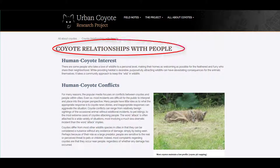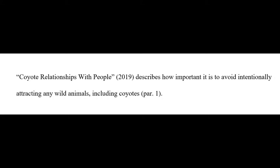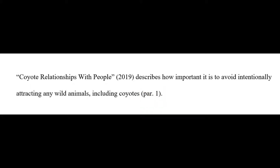If you are citing a work with no known author, use the source's full title in your signal phrase, followed by the date of publication. You can give the page number or location of the cited text at the end of the sentence. If you are citing a webpage or an electronic document with no page numbers, you can identify paragraph numbers in your in-text citation to aid your reader in finding the information. We write this as "par." followed by the paragraph number.